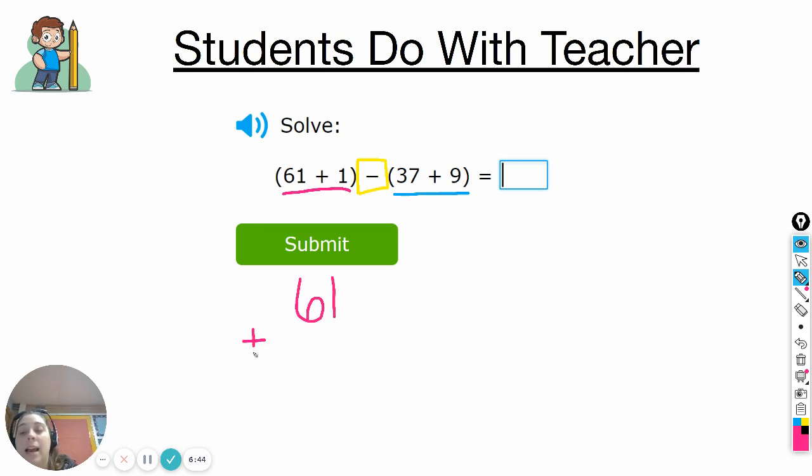So, first, let's solve 61 plus 1. I'm going to stack it and add it, although this might be one that you can just do in your head. First, I add up my ones. 1 plus 1 is 2. And then my 6, I have nothing else to add to it, so I still have 6. So, I figured out this answer equals 62.